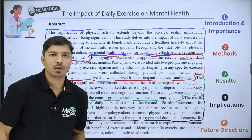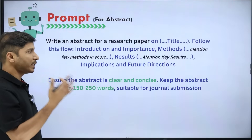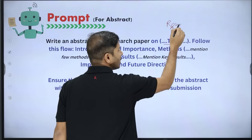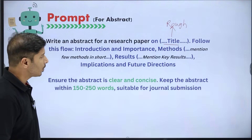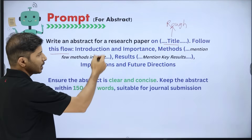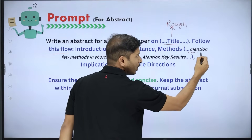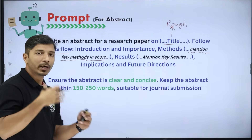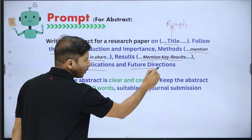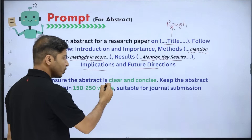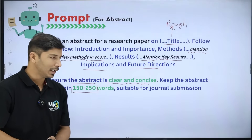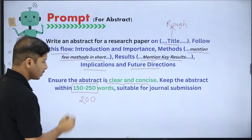To generate this abstract, put this prompt in ChatGPT: 'Write an abstract for a research paper on [your title].' You have to paste your rough title here. Then follow this flow — introduction and importance, methods (mention the specific methods you want to include), results, implications, and future directions. Also mention that the abstract should be clear and concise, and keep it within 150 to 250 words. Stick to the specific journal's guidelines regarding word limits.